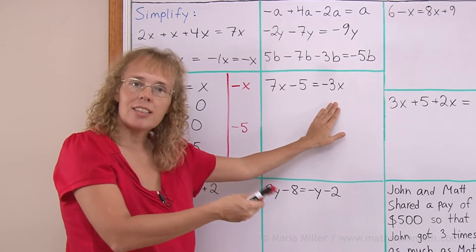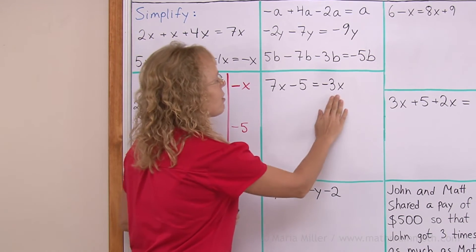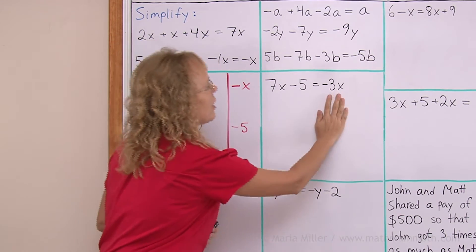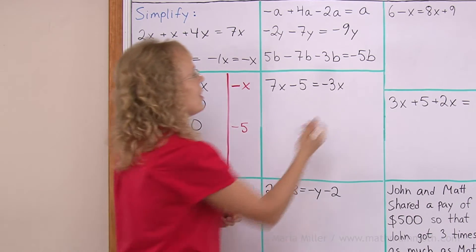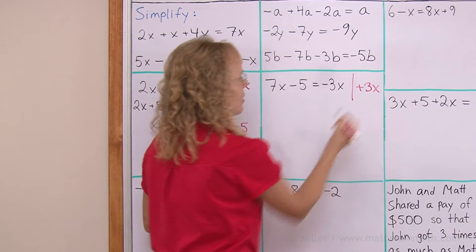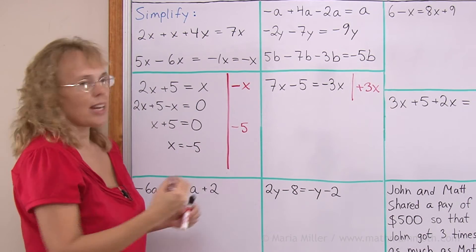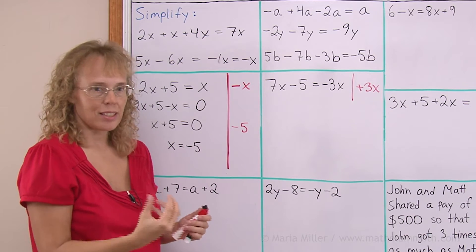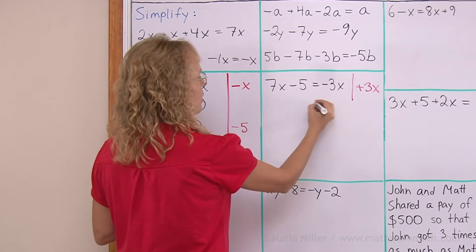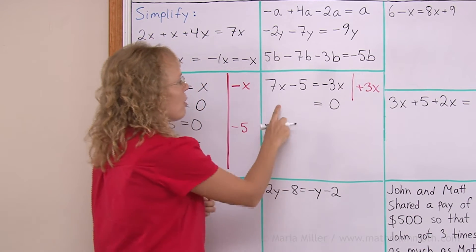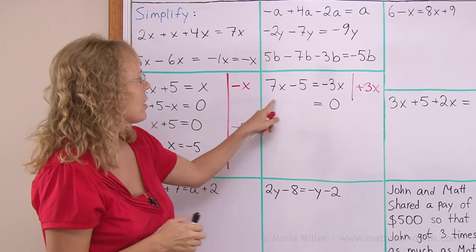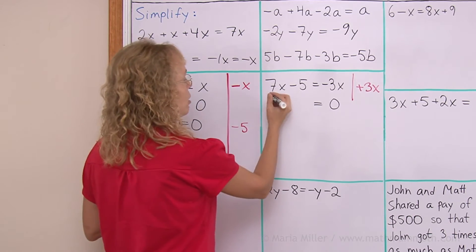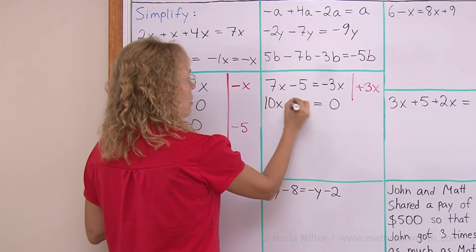7x here, negative 3x on the other side. If we want to get rid of this negative 3x on this side, then we add that. We add 3x. Negative 3x and 3x will cancel each other and leave a 0 on that side. So, we will have 0 on this side. On this side, what do we have if we add 3x? There's 7x already. Add 3x. So, we get 10x and minus 5.